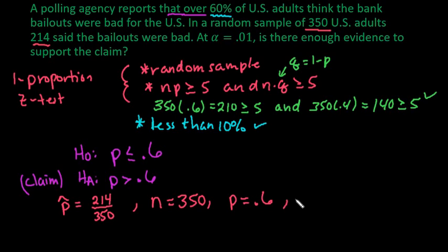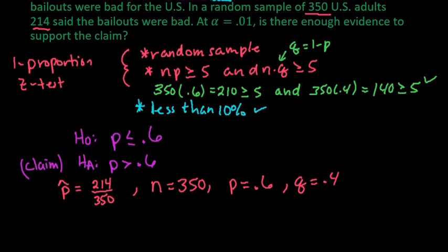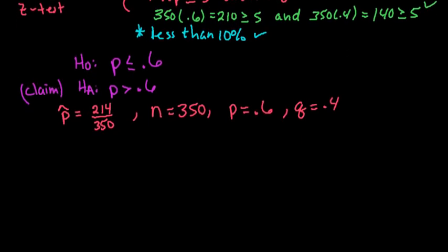And then we have to know P and Q. And P is 0.6. Q is 0.4. And remember, we found this one by doing the 1 minus P. So now that we have all of the information, I'm going to go ahead and draw out my model.